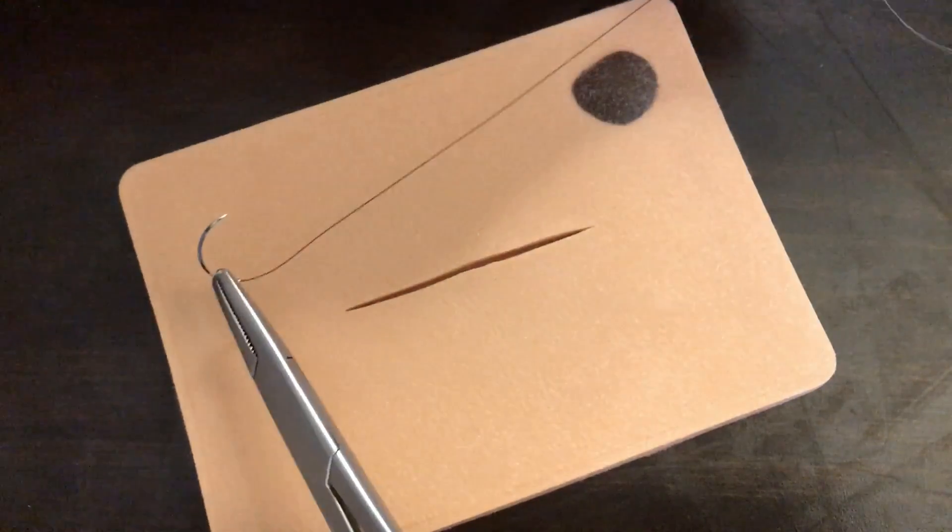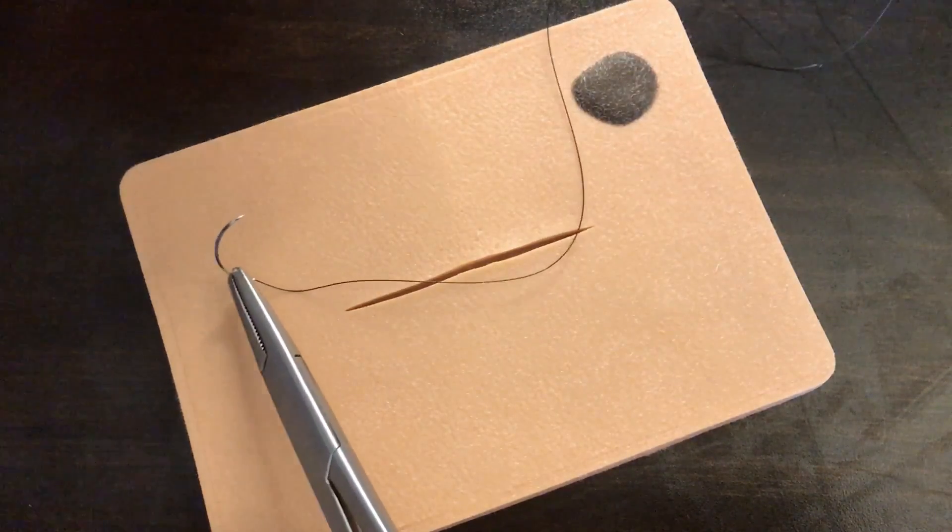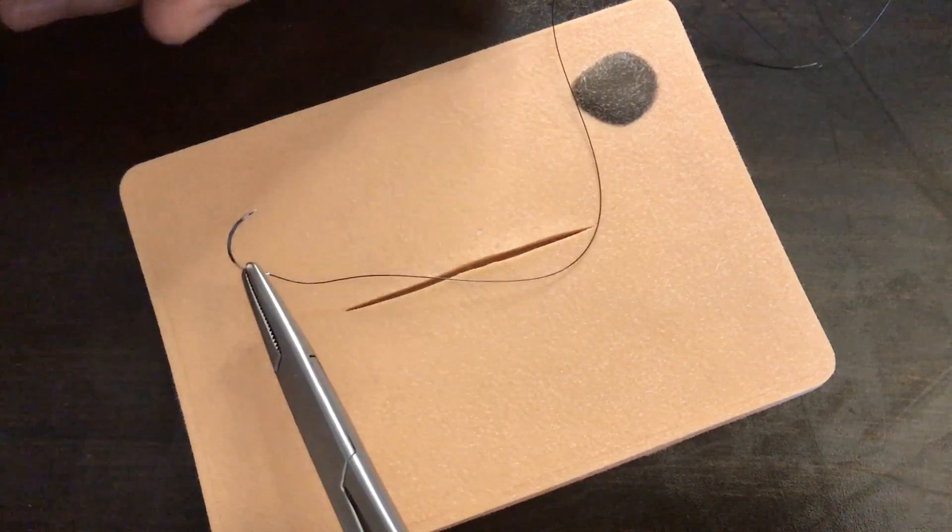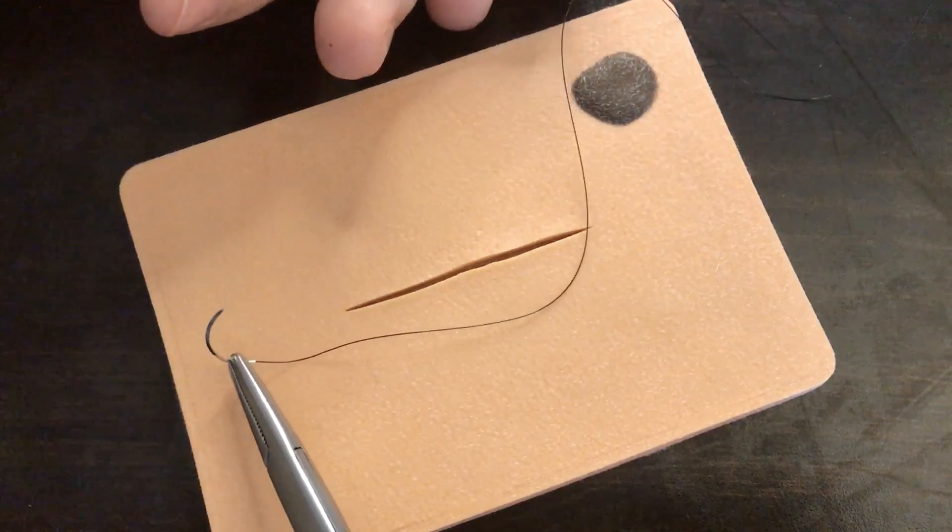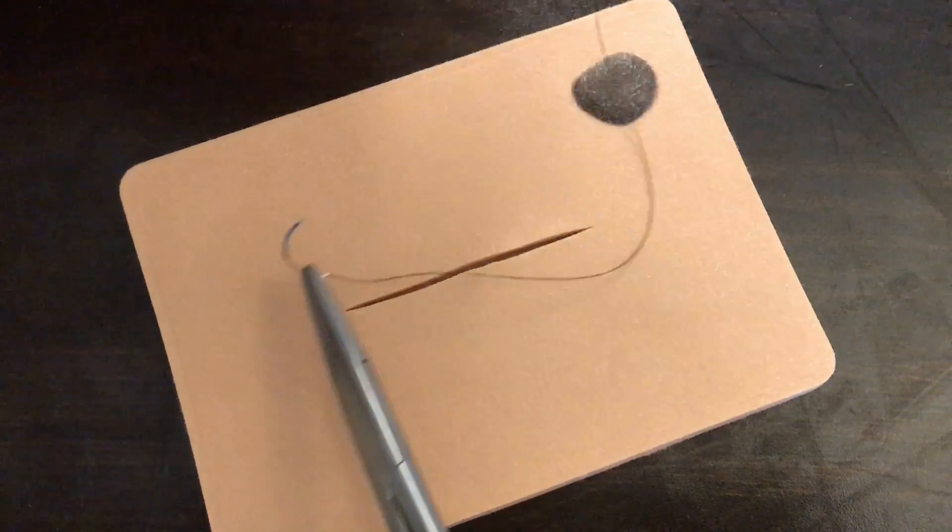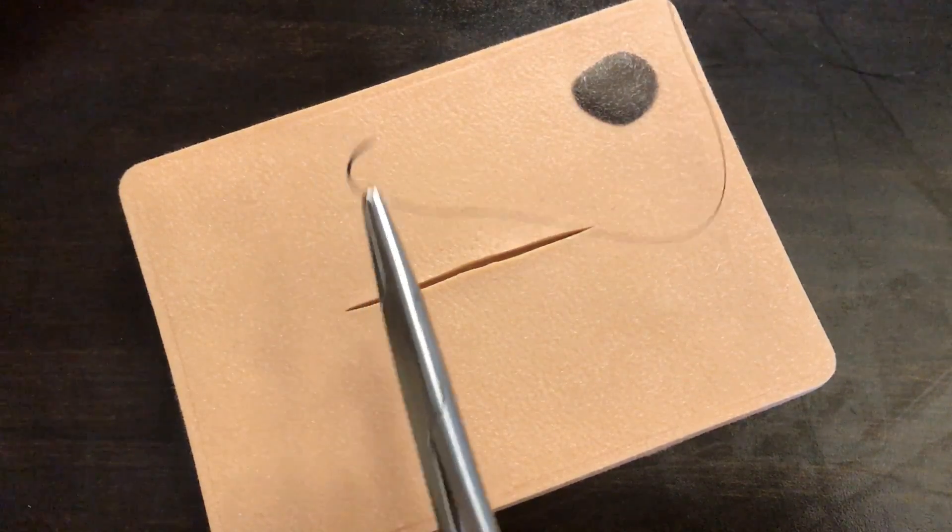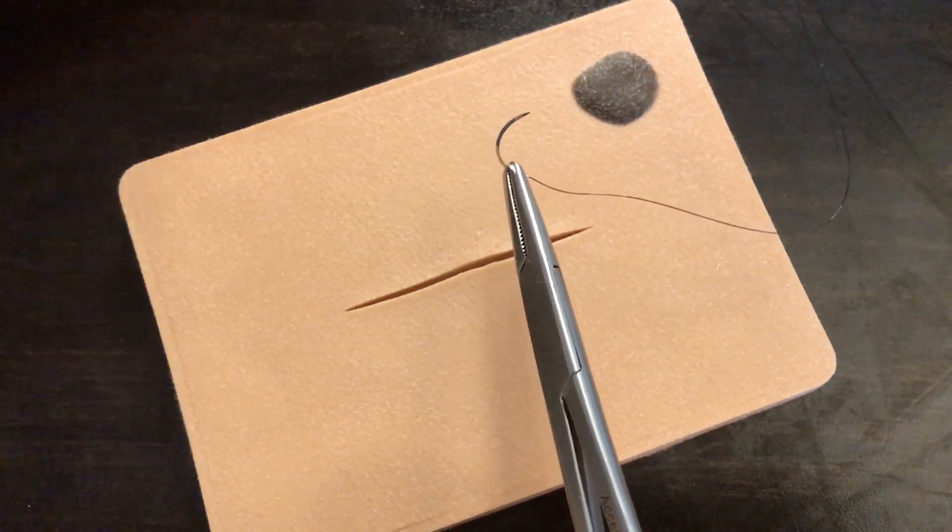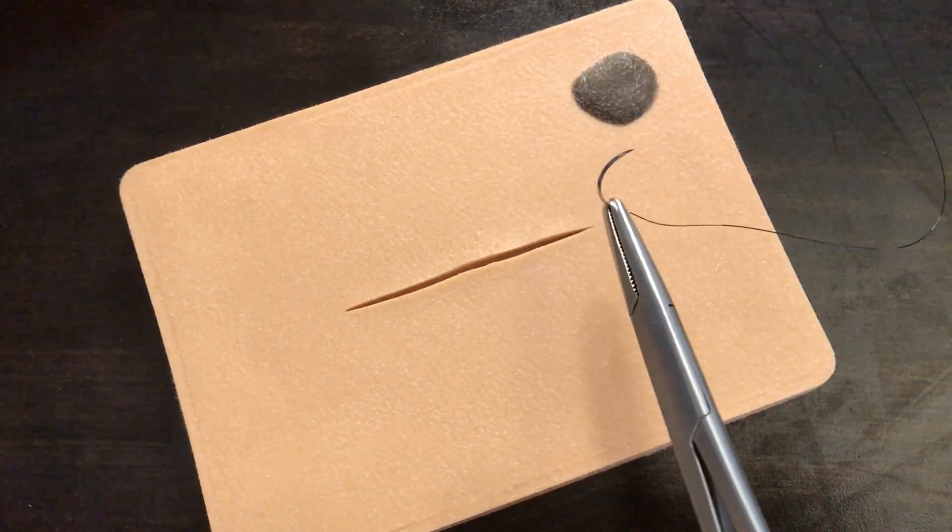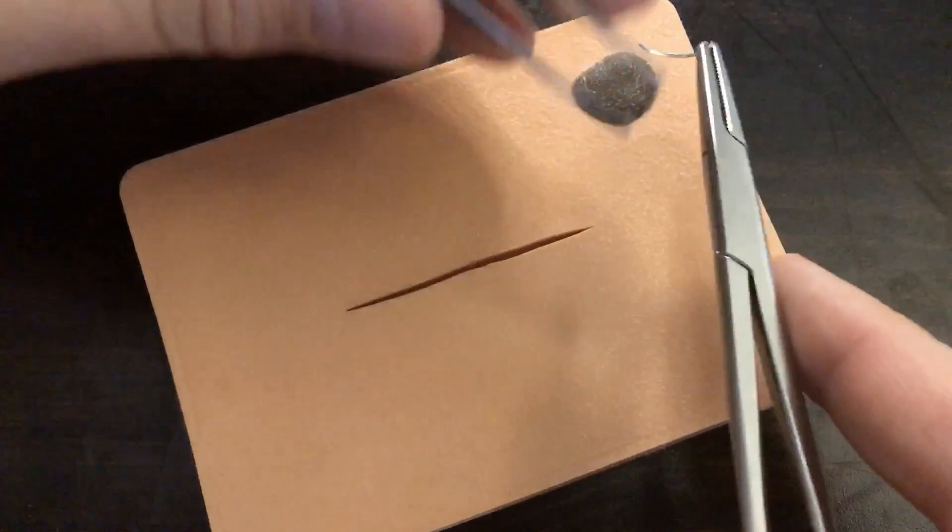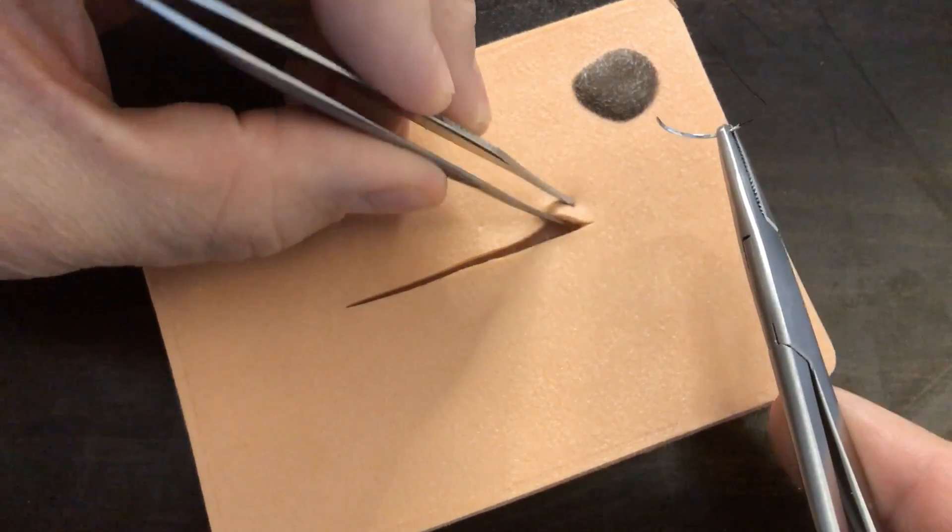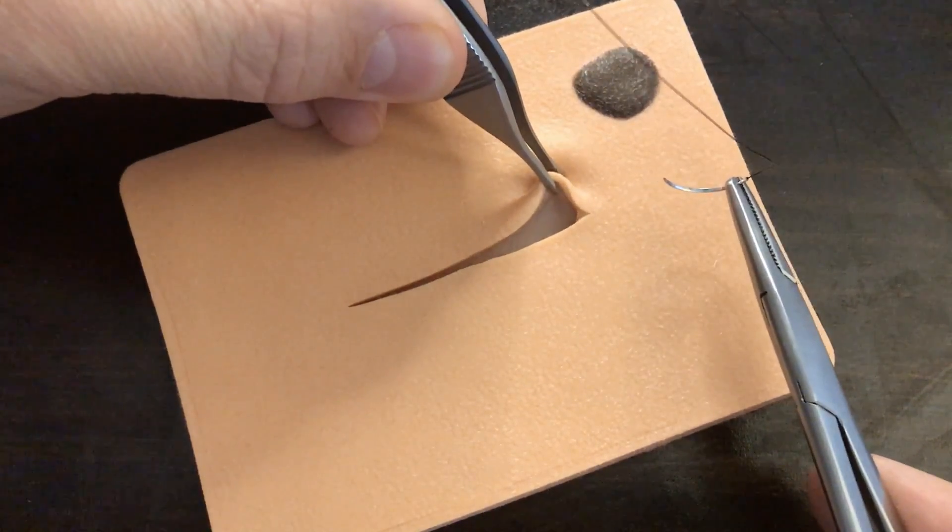Now the suture that you would use to do subcuticular would need to be something dissolvable. Generally I use something like a 5-O monocryl. Now 5-O monocryl does not look like this. This is a 4-O nylon. I'm simply using this 4-O nylon for the video purposes so that you can see what I'm doing. If I were actually using a 5-O monocryl which looks a lot like small fishing line, you might not actually be able to see it very well in the video. So understand that 5-O monocryl is a good suture material for a subcuticular stitch.